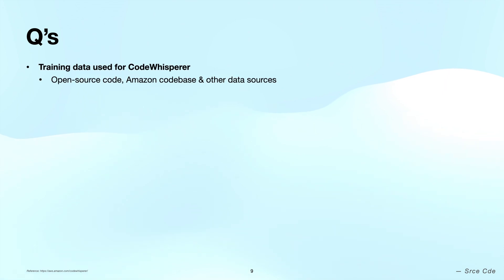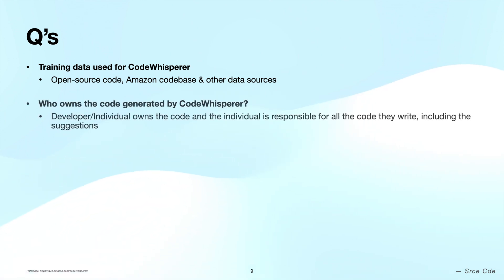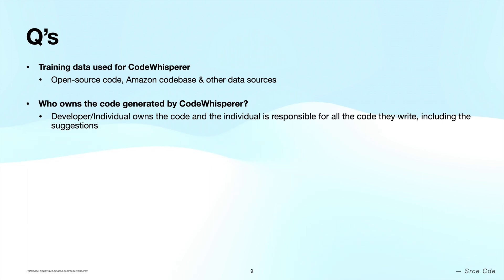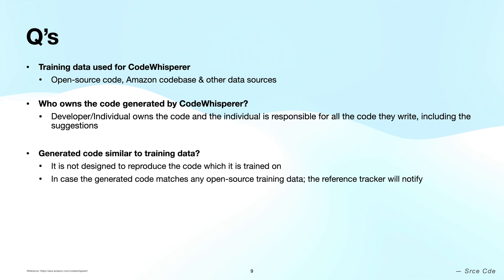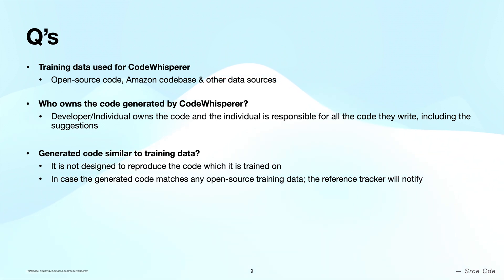Now let's address a few common questions. Training data for CodeWhisperer includes open source code, Amazon's codebase, and other data sources. The developer will own the code generated by CodeWhisperer and will be responsible for it. CodeWhisperer is not designed to reproduce training data, but if generated code is similar to open source code from the training data, the reference tracker will flag and notify you.